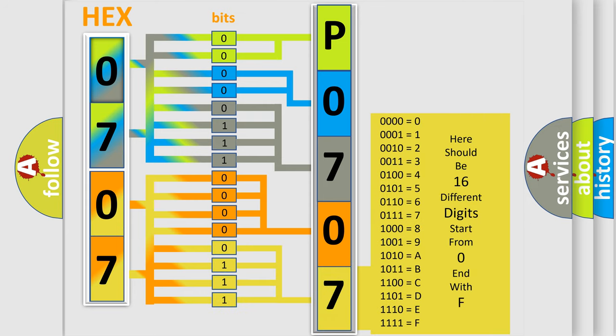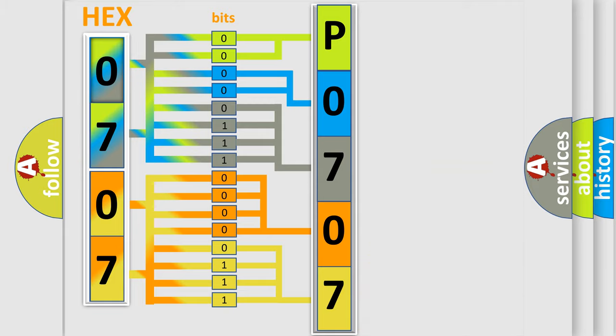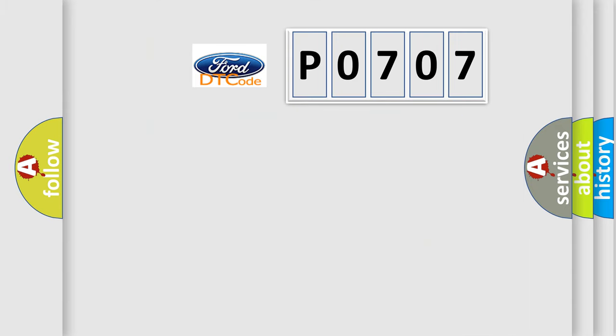We now know in what way the diagnostic tool translates the received information into a more comprehensible format. The number itself does not make sense if we cannot assign information about what it actually expresses. So, what does the diagnostic trouble code P0707 interpret specifically for Infinity car manufacturers?